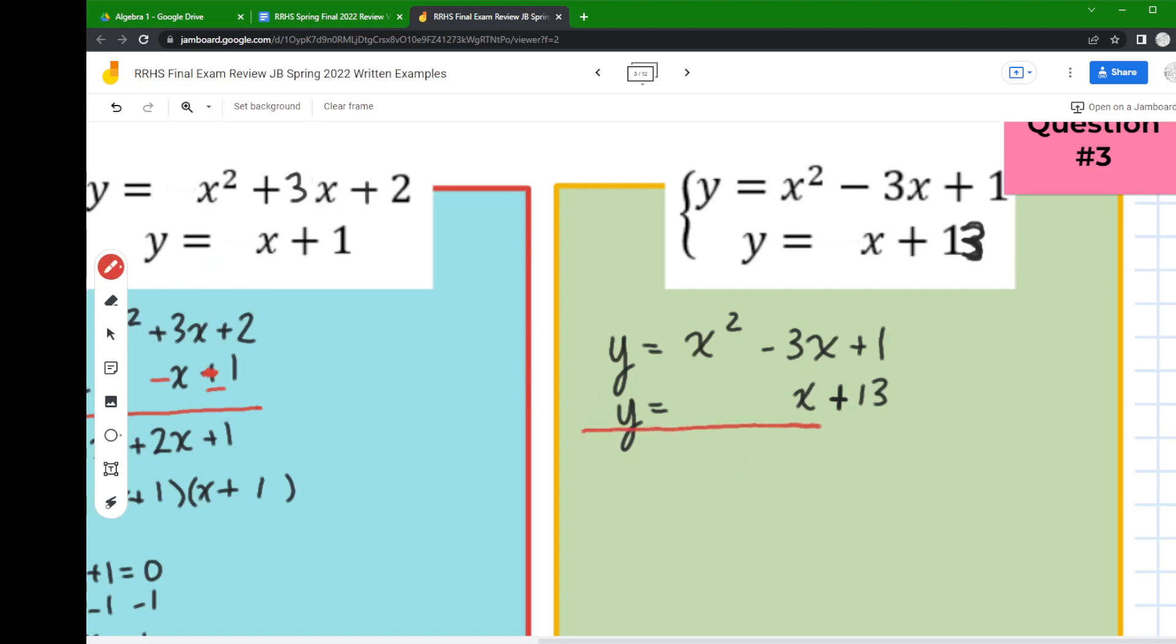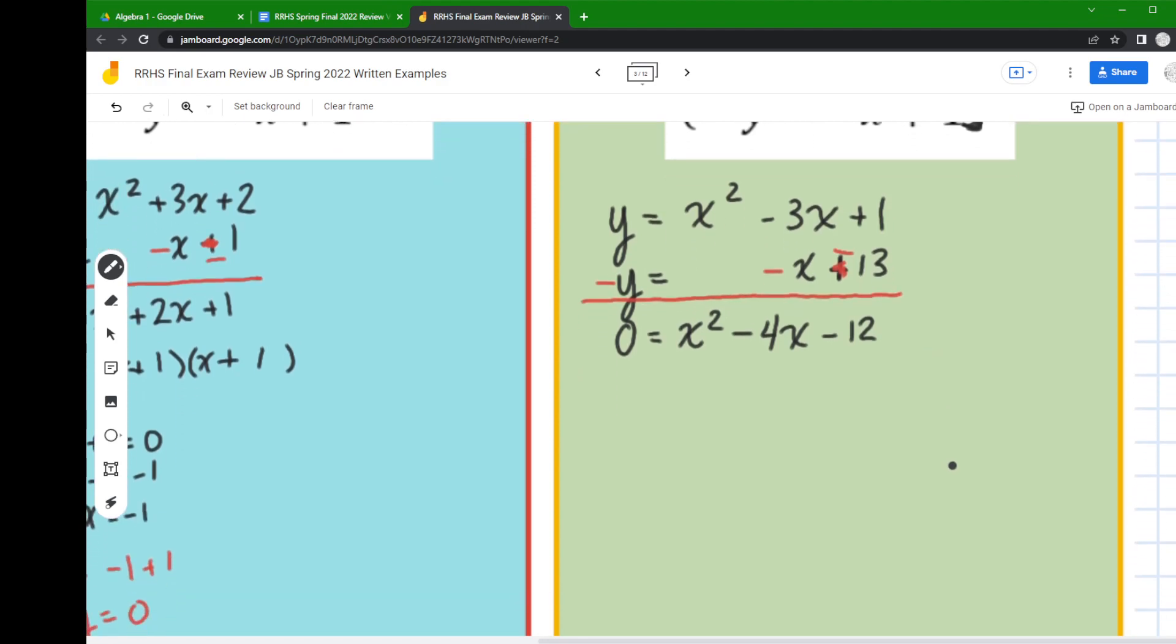So we lined up our variables. Now I'm going to flip my signs so this positive y turns negative, positive x turns negative, and positive 13 turns negative. And now we add down so y minus y is zero, x squared plus nothing is x squared, negative 3x and negative x makes for negative 4x, and 1 minus 13 is negative 12.